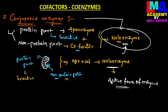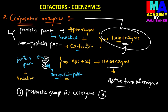The cofactor present in the conjugated enzyme is again of three types: prosthetic group, coenzyme, and metal ion. These are the three different types of cofactors present in conjugated enzymes.